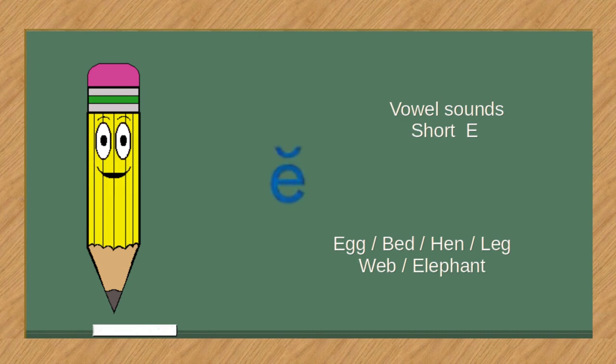Vowel sounds, short E. Egg, bed, hen, leg, web, elephant.